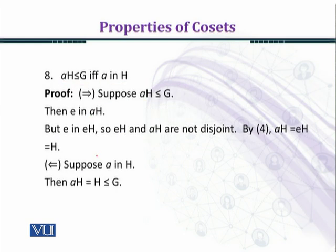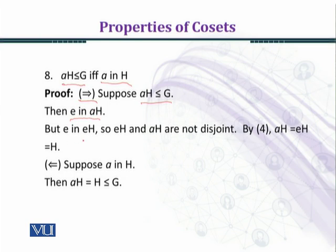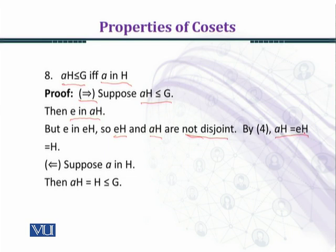Now we prove property 8: AH is a subgroup of G if and only if A belongs to H. First we prove the direct implication. Suppose AH is a subgroup of G. Then the identity element E is in AH, and so EH and AH are not disjoint. By property 4, either cosets are disjoint or coincident. Therefore AH coincides with EH, which equals H. In this way we have proved the direct implication.